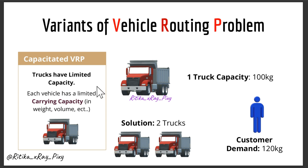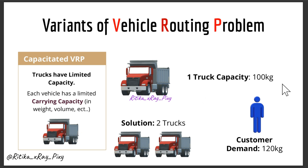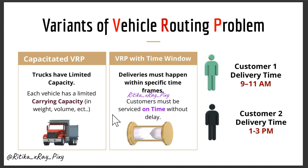The first variation is CVRP, the Capacitated VRP, where vehicle load capacity is considered. Trucks have limited capacity, so each vehicle has a limit on how much it can carry and we need to plan accordingly so that no vehicle is overloaded. For example, if a truck can carry only 100 kg and a customer demands 200 kg, you have to divide the delivery into two trucks.